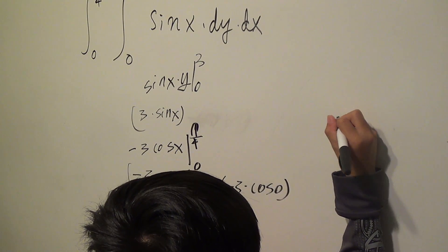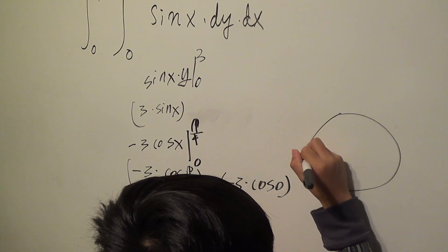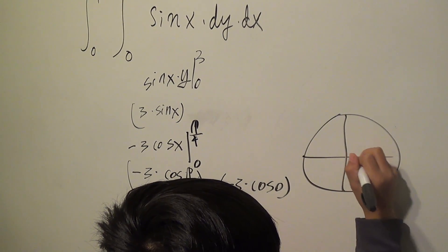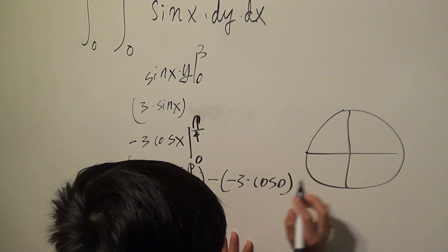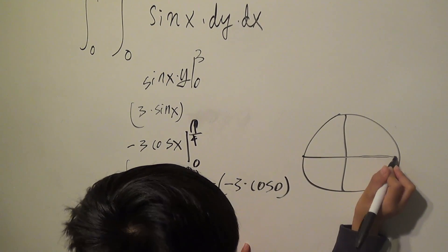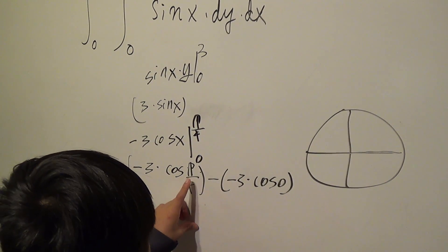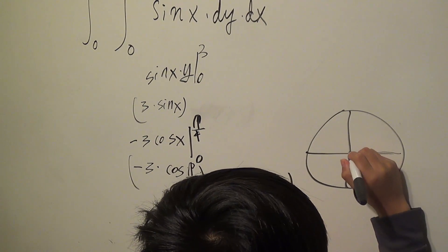Now, you draw a circle. First of all, cos 0 is 0 degrees, and cos π over 4 is 45 degrees.